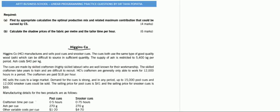The question states that Higgins company manufactures and sells pool cues and snooker cues. The cues both use the same type of good quality wood ash which can be difficult to source in sufficient quantity. So we are basically producing two products: pool cue and snooker cue.